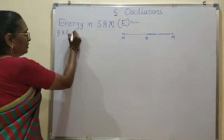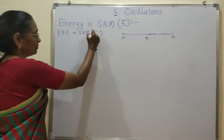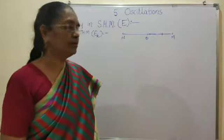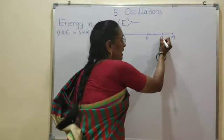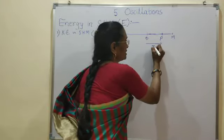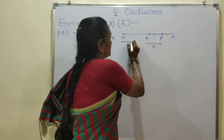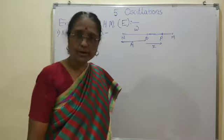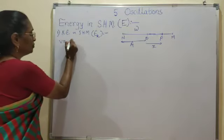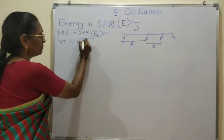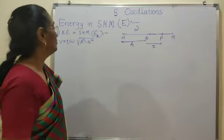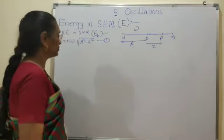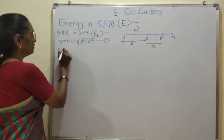Kinetic energy in SHM is denoted by EK. We consider the path of SHM MN with mean position as O. Suppose the particle is at position P, which is at distance X from the mean position. Amplitude of SHM is A and angular frequency is omega. Then velocity can be written as V equals omega times the square root of A squared minus X squared. Kinetic energy can be given by half M V squared.